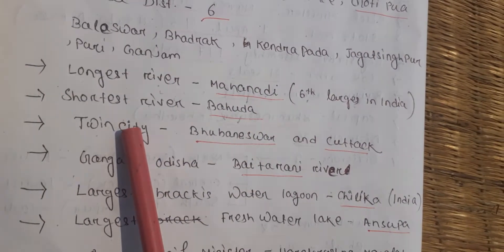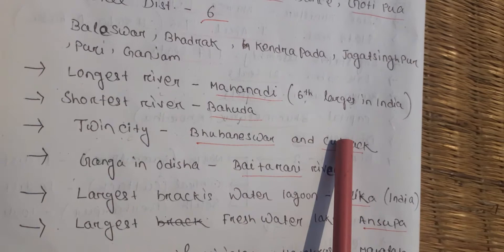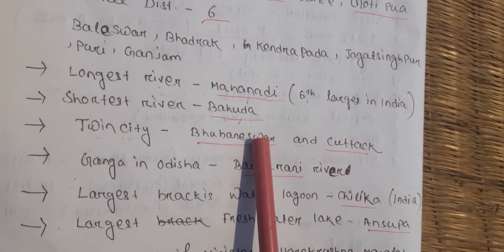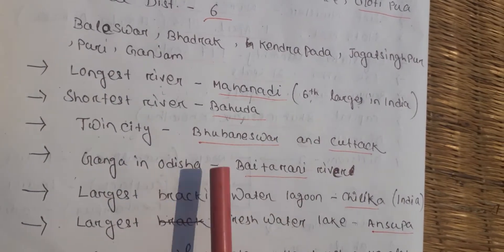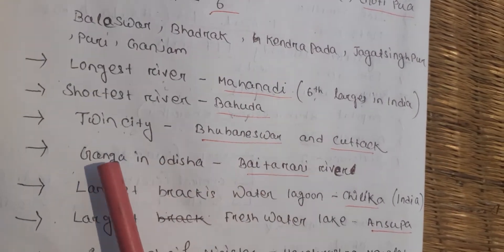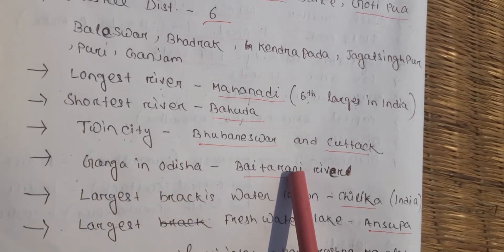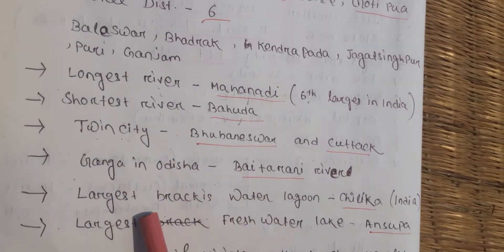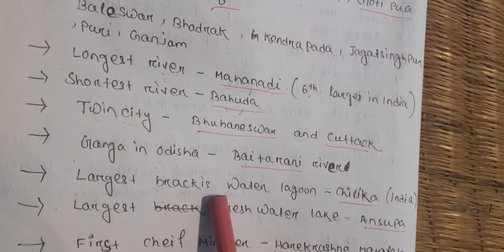Bhubaneswar and Cuttack are called the twin cities of Odisha. The Baitarani river is known as the 'Ganga of Odisha.' The largest brackish water lagoon in India is Chilika Lake, situated in Odisha.